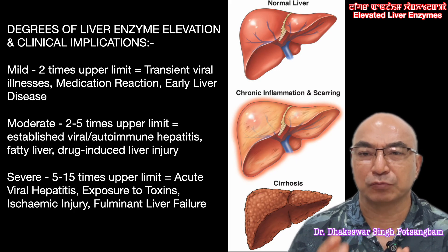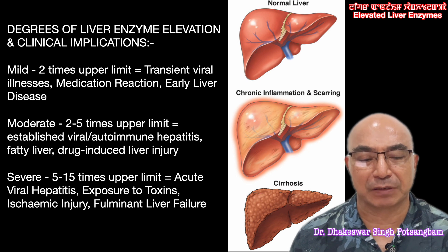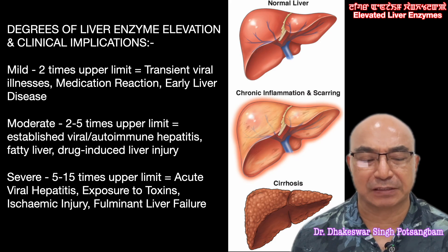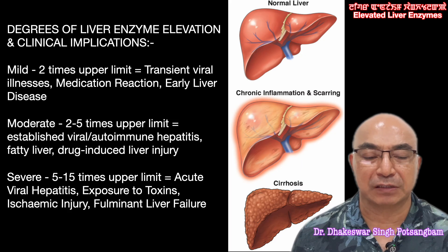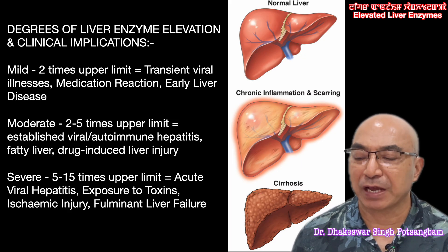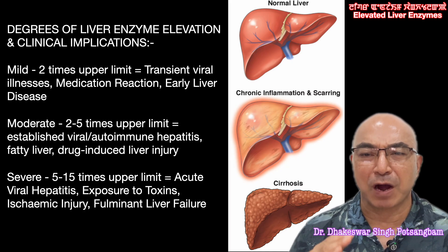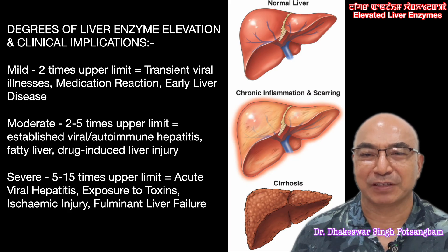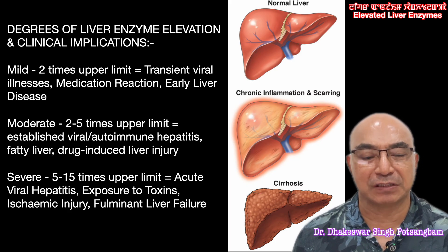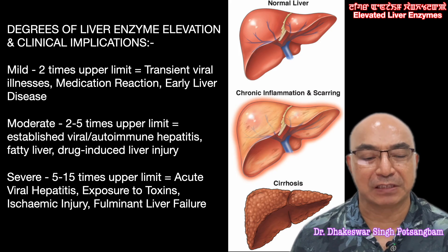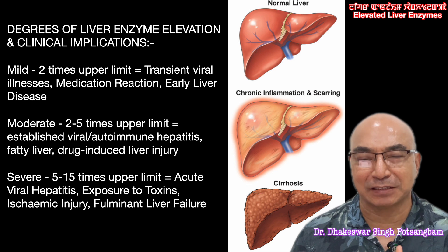In the moderate range — 2 to 5 times the upper limit — causes include viral hepatitis, autoimmune hepatitis, fatty liver, and drug-induced liver injury. These conditions represent established liver pathology that warrants further investigation.